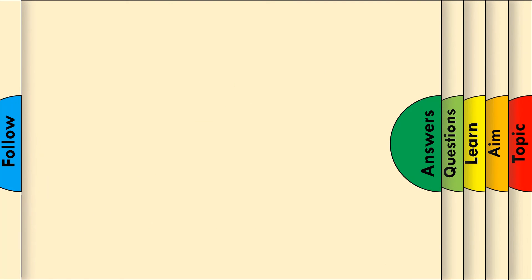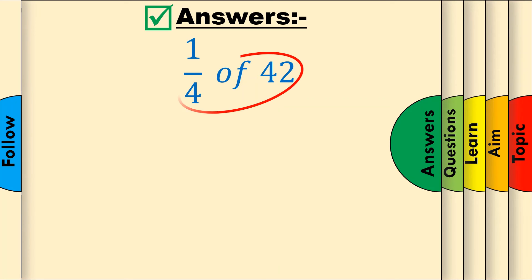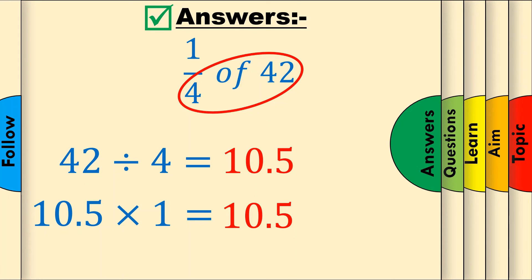Question 3. 1 over 4 of 42. The amount, 42, divided by the denominator, 4, is 10.5. To quickly do this in your head, try halving 42 to get 21, and halve it again to get 10.5. Now, 10.5 multiplied by the numerator of 1 is simply 10.5, which is the final answer.